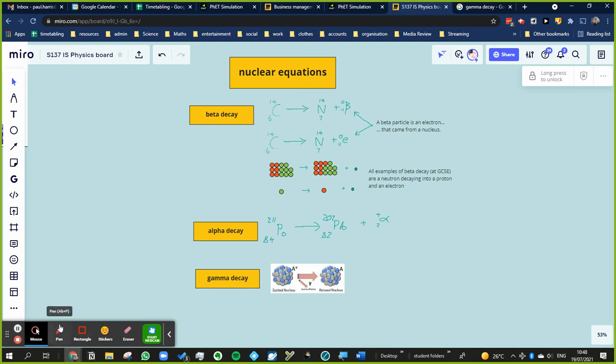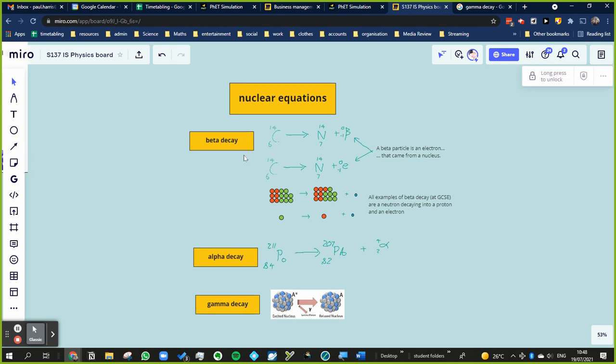So these are the three types of decays and the three types of radiations that you're going to look at. We've got, and I've done nuclear equations too, of each one.